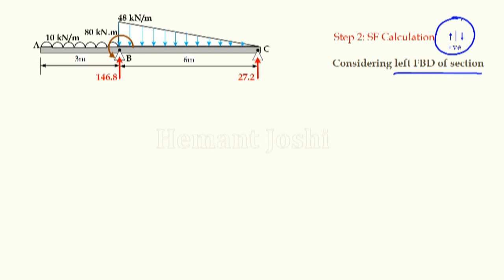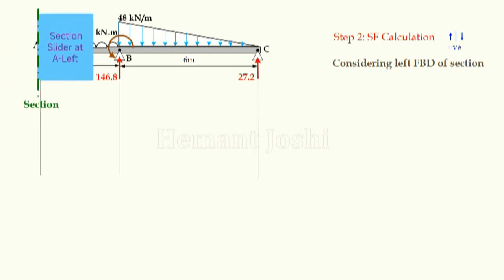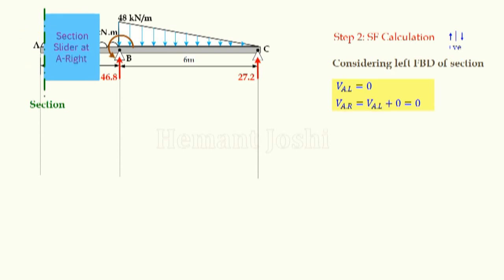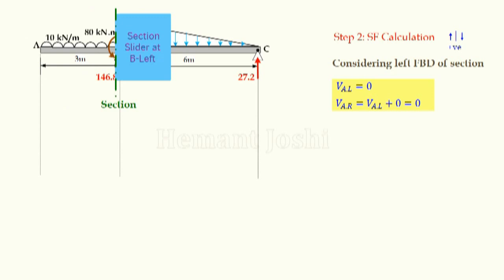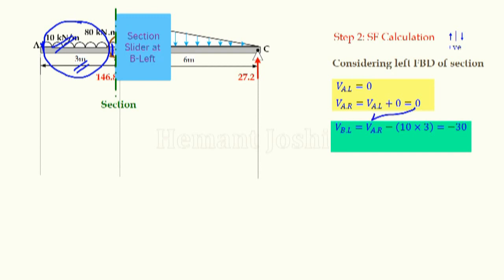VA left: considering the left FBD, there is empty space, so VA left = 0. VA right: from left, no point load is coming, so final answer is 0. Next, VB left: from A left to B left, there is a UDL — intensity 10, distance 3, so total UDL = 10 × 3 = 30 kN acting downward, which is negative. Original value is 0 and newcomer is −30, so VB left = −30 kN.